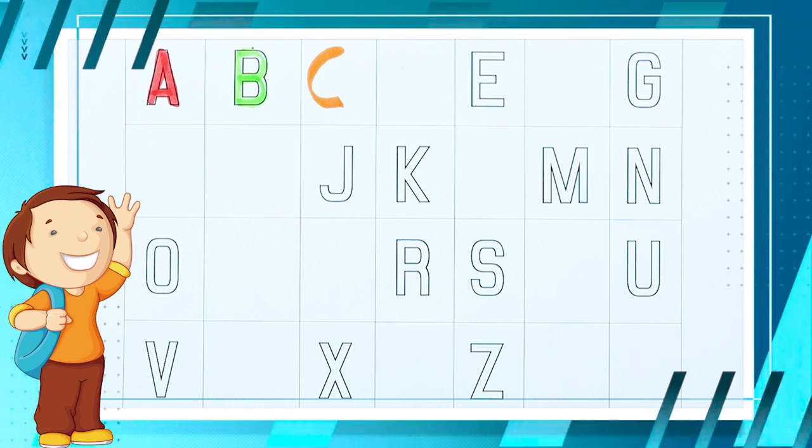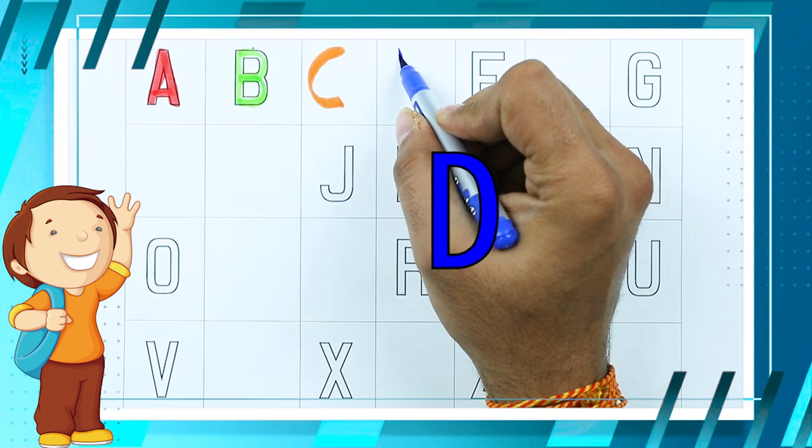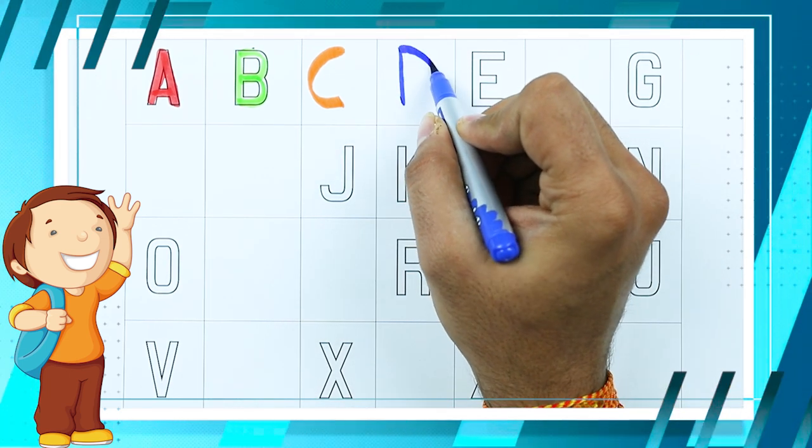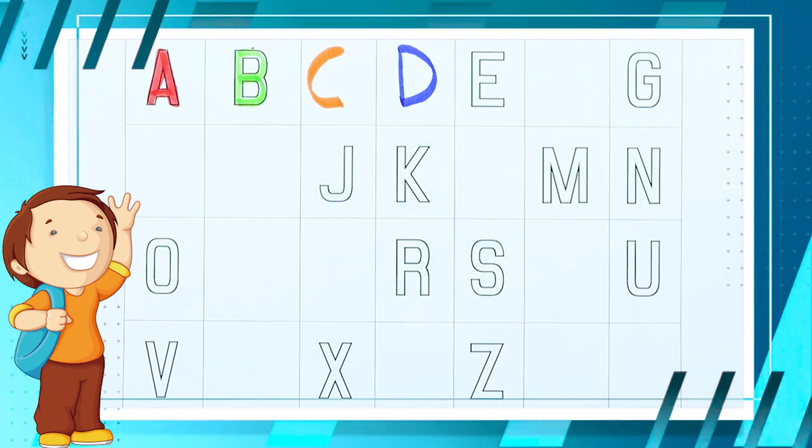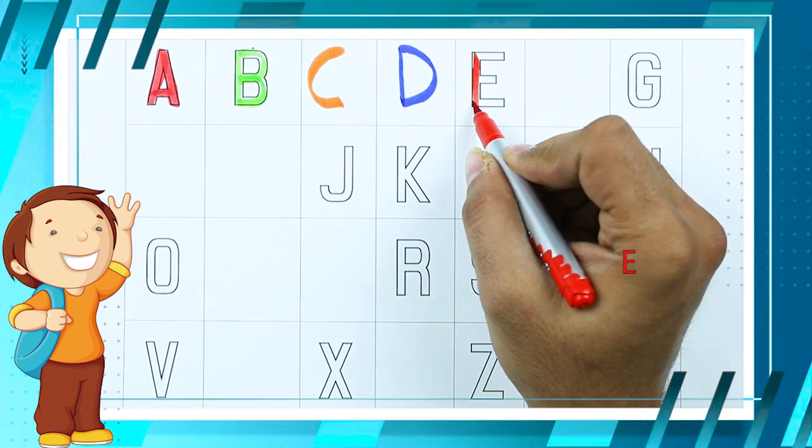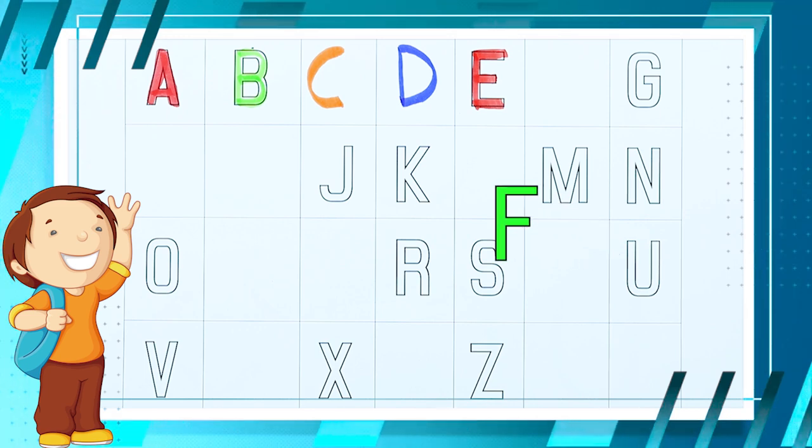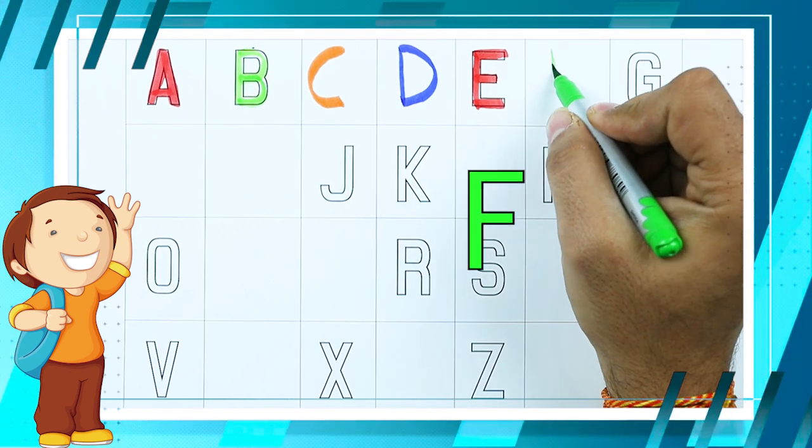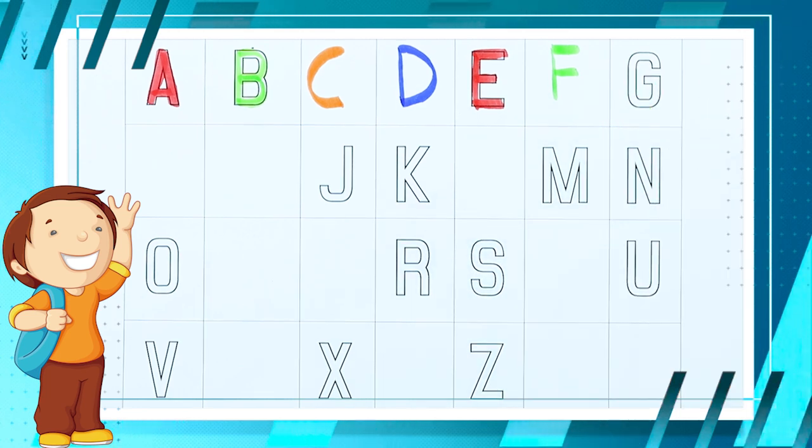What next? Tell me, tell me. Yes, right. D. D for dog with blue color. E. E for elephant with red color. F. F for fish with green color.